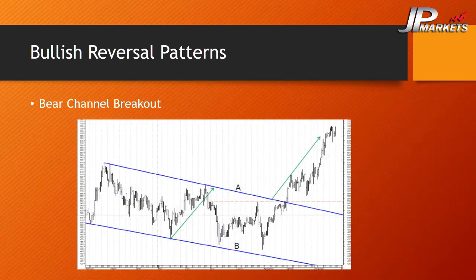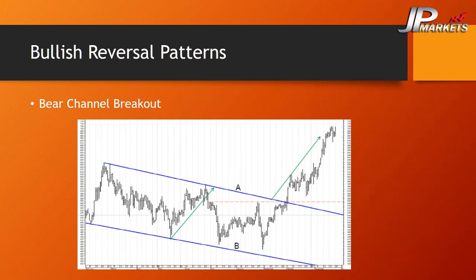This is called the bear channel breakout. The formation requires falling tops and bottoms that fit within a channel. The breakout occurs when price moves through the upper slope. Duration can persist until the breakout occurs and could be days, weeks, months, or very unlikely but possibly years. The target is the width of the two parallel lines — when the breakout occurs, measure the distance between the lines and set that distance above the breakout point as your take profit.